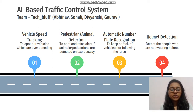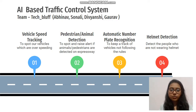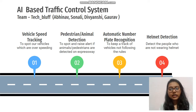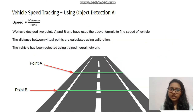Our solution comprises mainly four major features. The first is vehicle speed tracking, to spot vehicles that are over-speeding. The second is pedestrian or animal detection, to spot and raise an alert if any animal or pedestrian happens to be on the expressway. The third is automatic number plate recognition, to keep track of vehicles not following the rules. The last one is helmet detection, to detect people who are not wearing helmets.